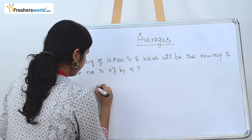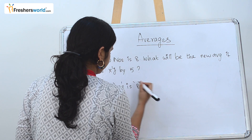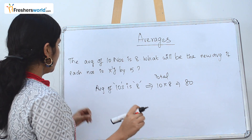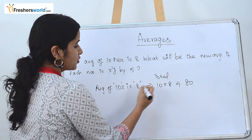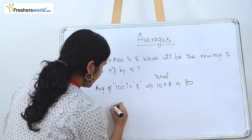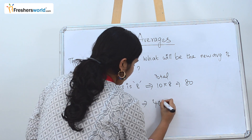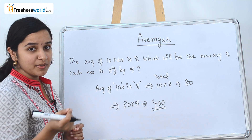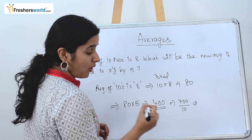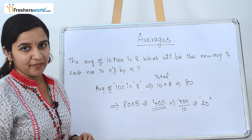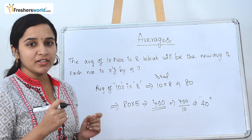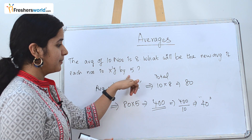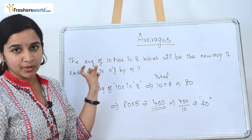Let's split the question. The average of 10 numbers is 8, so the total value is 10 into 8, which is 80. Each number is multiplied by 5, so the new total is 80 into 5, which equals 400. They are asking for the new average, not the total. The total is 400 and the count of numbers is 10, so 400 divided by 10 gives the new average, which is 40.